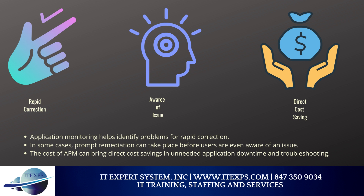Ensuring that the application is working well is a wise strategy for any business that relies on its applications or software services. The corollary to revenue is cost — it costs money to maintain and troubleshoot an application. An enterprise workload that functions poorly, experiences frequent software or infrastructure issues, or poses availability challenges will incur costs to troubleshoot and remediate. Application monitoring helps identify problems for rapid correction, and in some cases, prompt remediation can take place before users are even aware of an issue. The cost of APM can bring direct cost savings in unneeded application downtime and troubleshooting.